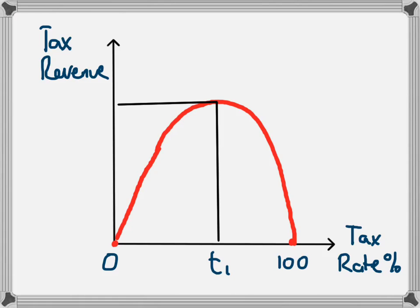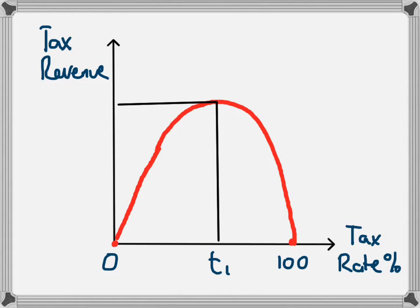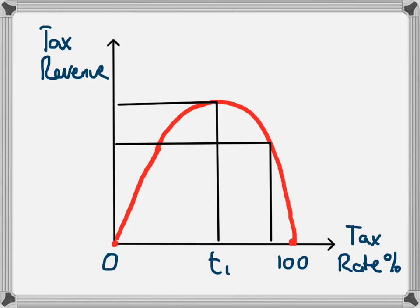If the tax rate was below that — so if we had a lower tax rate — then that lower tax rate will lead to a decrease in tax revenue. In the same way, if the tax rate was higher — so if our tax rate was up at a higher level — then the revenue will also be lower than the optimum amount of revenue received from T1.